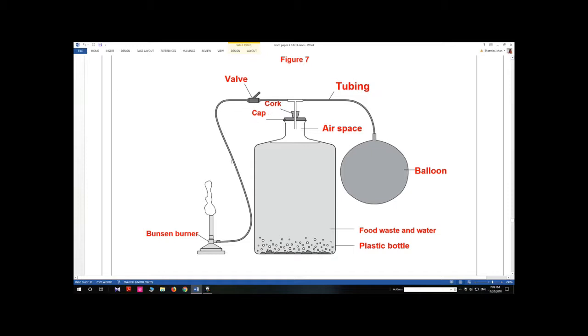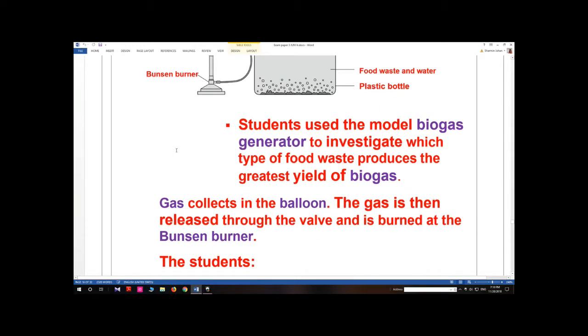Students used the model biogas generator to investigate which type of food waste produces the greatest yield of biogas. Gas collects in the balloon, the gas is then released through the valve, and is burned at the Bunsen burner.